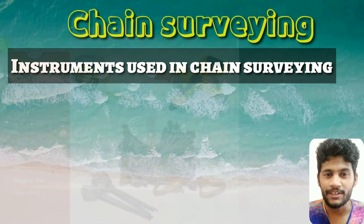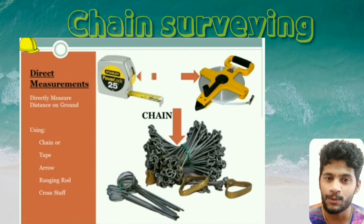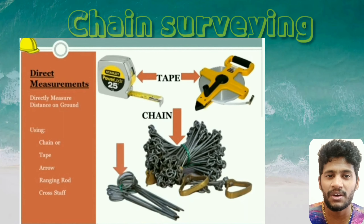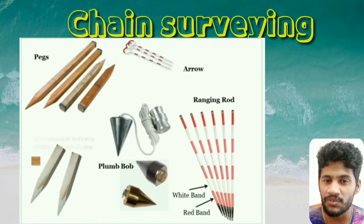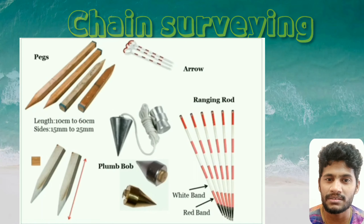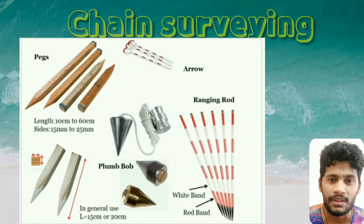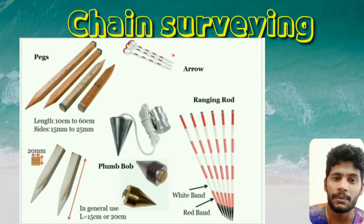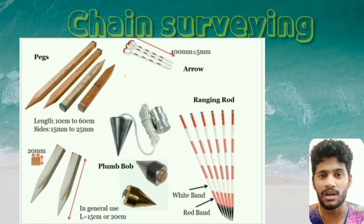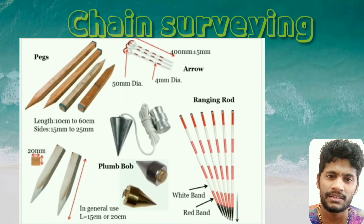In chain surveying, knowing the instruments is very important — particularly the use of chains or tapes based on the situation. Wooden pegs of length varying from 10 cm to 60 cm are also used. A plumb bob is used for leveling. Arrows have a top diameter of 50 mm and a bottom stick with a diameter of 4 mm, with a total length of 40 cm.